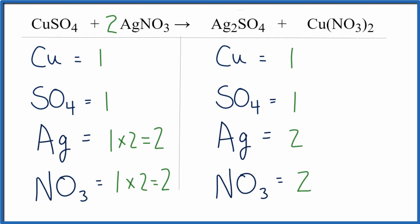That really speeds things up. This is Dr. B with a balanced equation for CuSO4 plus AgNO3 yields Ag2SO4 plus Cu(NO3)2. And thanks for watching.